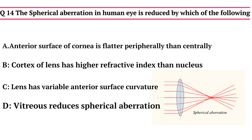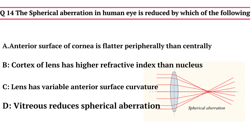Question 14: Spherical aberration in the human eye is reduced by which of the following? Option A - anterior surface of cornea is flatter peripherally than centrally, Option B - cortex of lens has higher refractive index than nucleus, Option C - lens has variable anterior curvature, Option D - vitreous reduces spherical aberration. The correct answer is Option A: anterior surface of cornea is flatter peripherally than centrally.